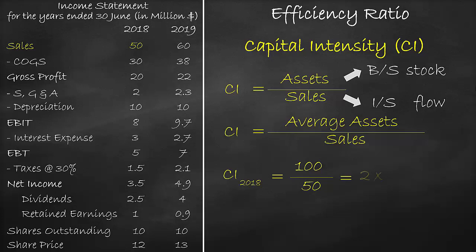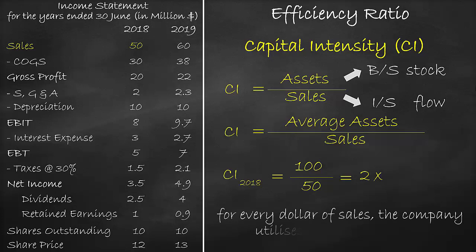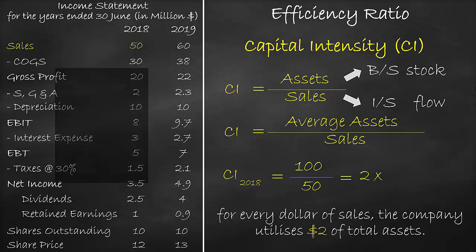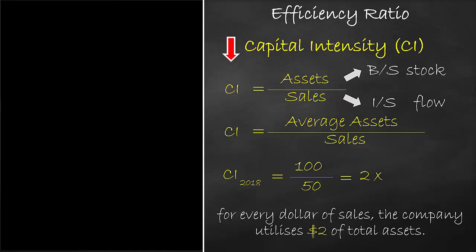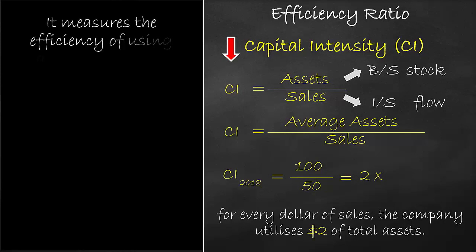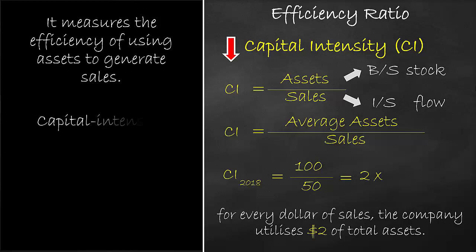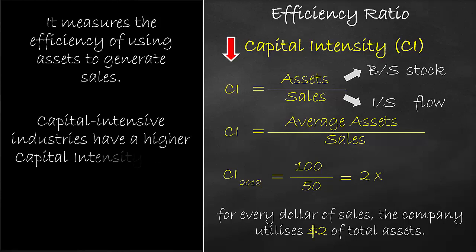The unit of the capital intensity ratio is times. It means that for every dollar of sales, the company utilizes $2 of total assets. The lower the capital intensity ratio, the better. It measures the efficiency of using assets to generate sales. Capital intensive industries have a higher capital intensity ratio, while labor intensive industries have a lower capital intensity ratio.